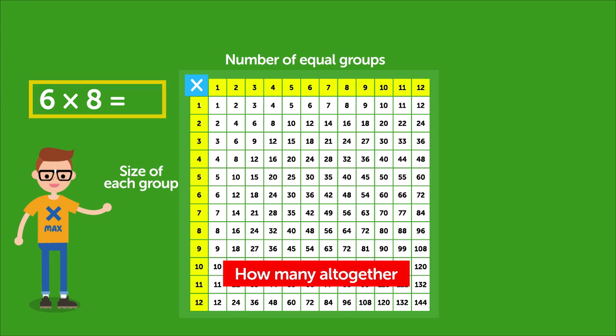6 multiplied by 8 means there are 6 equal groups. So we read across the yellow row to find the 6. Then we look down the yellow column until we reach the size of the groups, which is 8. And the answer is the white square where the number of groups column meets the size of the groups row. 6 multiplied by 8 equals 48.